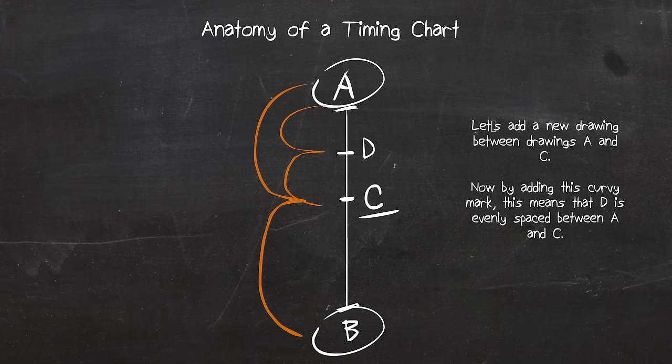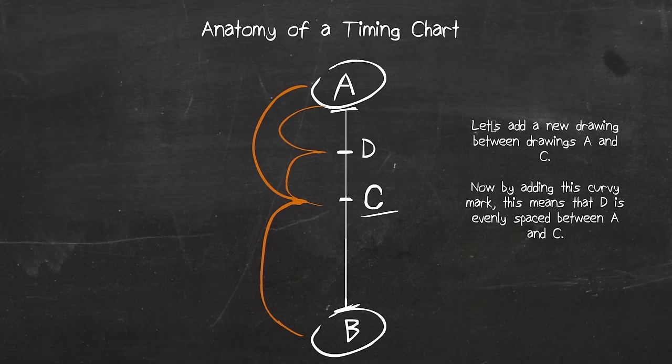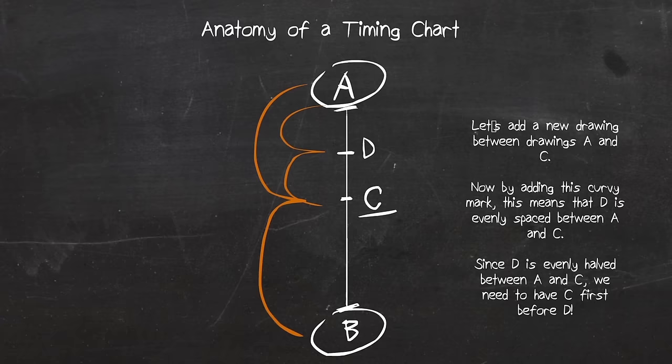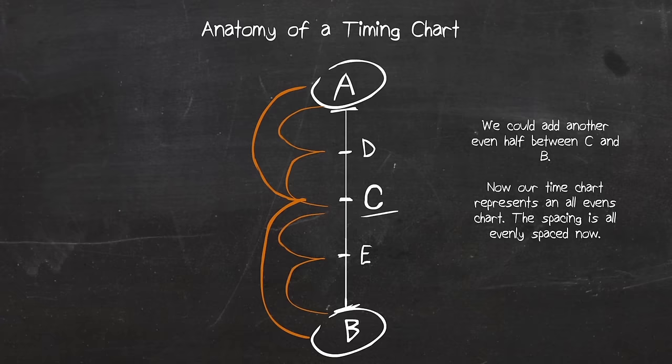I'm going to add another drawing in-between A and C. Now, by applying these two curves, this means that D is evenly spaced between A and C. My question to you guys now is, can you make drawing D before having finished A or C? The answer is no. Since D is evenly spaced in-between A and C, we need to have done those drawings first because they have the information we need to make drawing D. I'm just going to apply the same thing at the lower half.